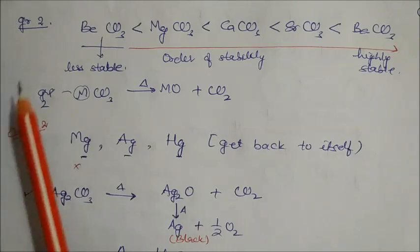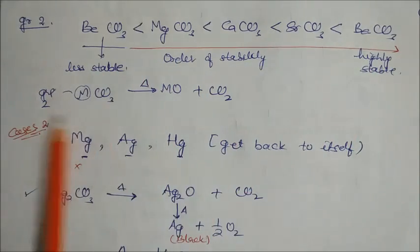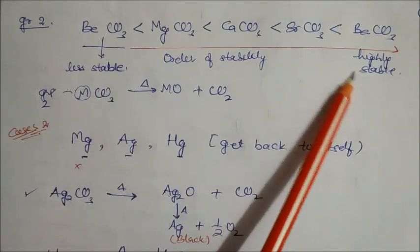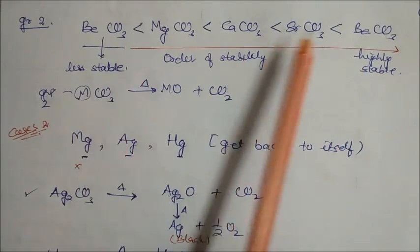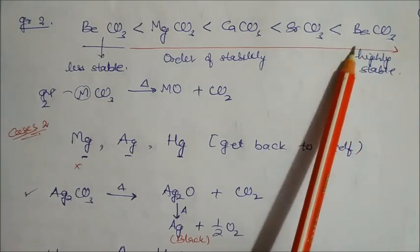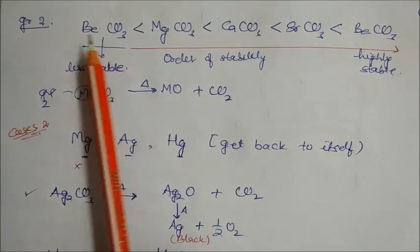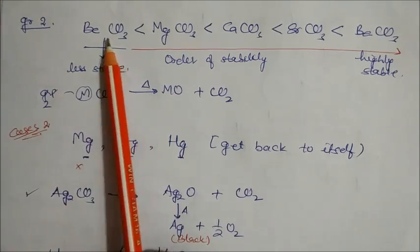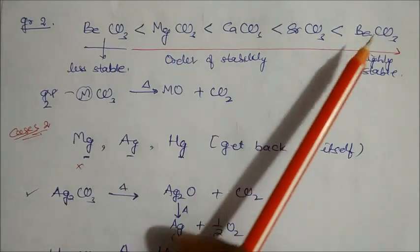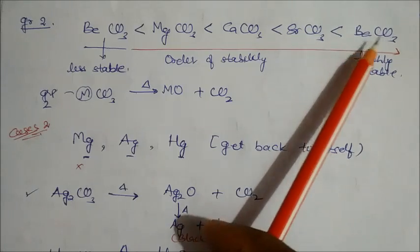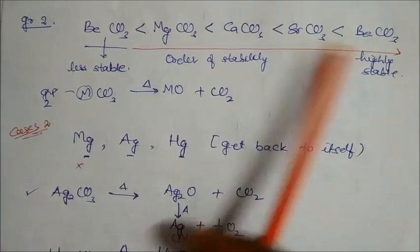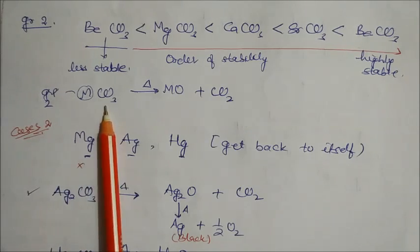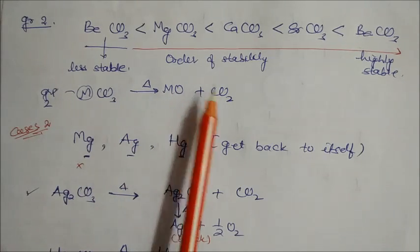Similarly in Group 2, thermal stability of carbonates increases down the group. Beryllium carbonate is less stable while barium carbonate is more stable with higher ionic character. The general reaction for any Group 2 metallic carbonate on heating gives metallic oxide plus carbon dioxide.